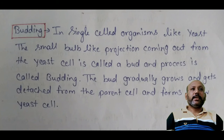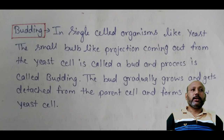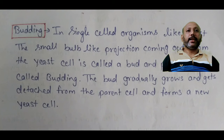In single-cell organisms like yeast, the small bulb-like projections coming out from the yeast cell are called buds and the process is called budding. The bud gradually grows and gets detached from the parent cell to form a new yeast cell.